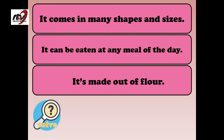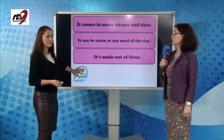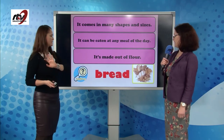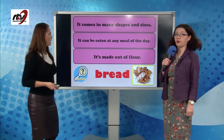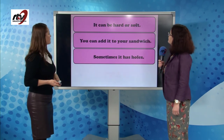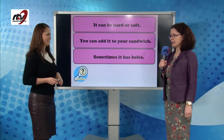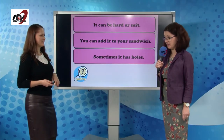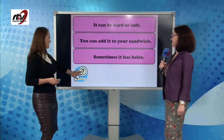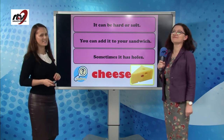It comes in many shapes and sizes. It can be eaten at any meal of the day and it's made of flour. We eat it with everything. It's bread. Next riddle: it can be hard or soft. You can add it to your sandwich. Sometimes it has holes in it, and mice love it. It's cheese.